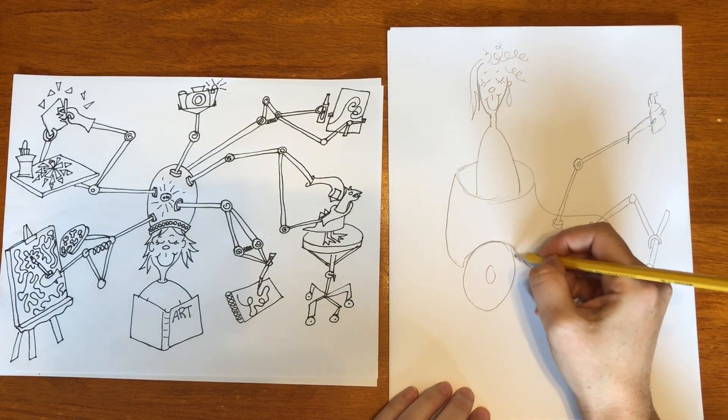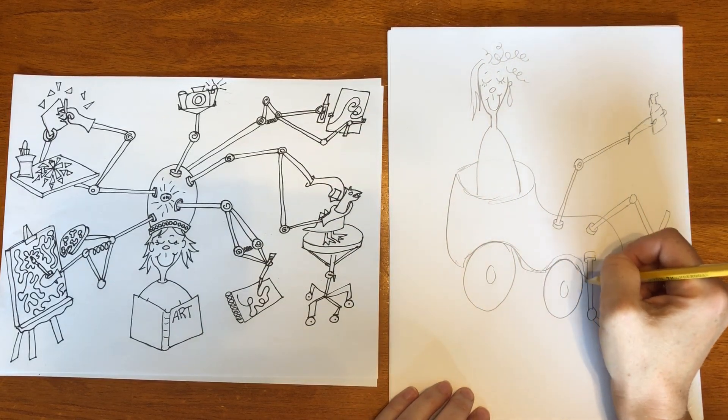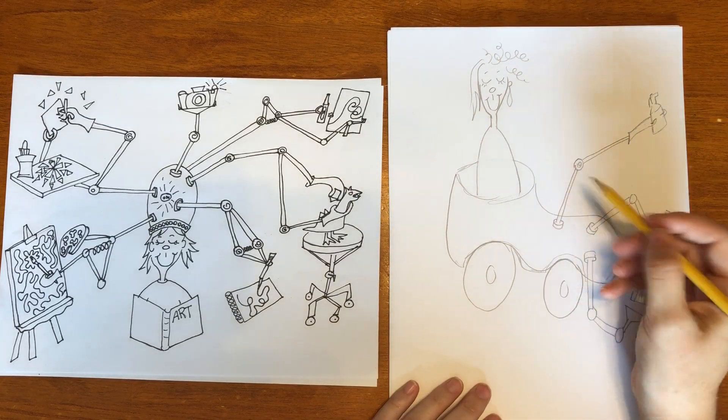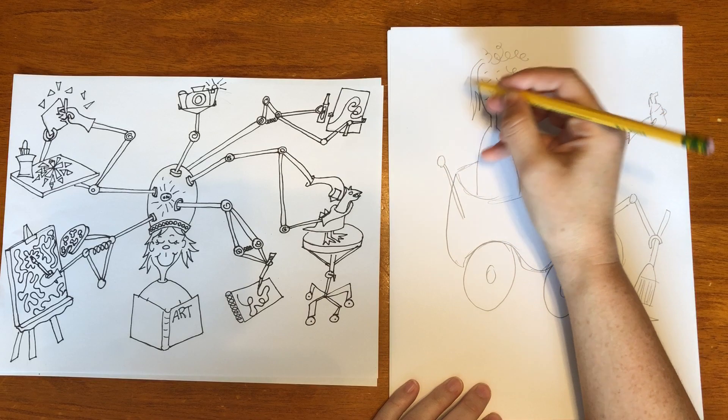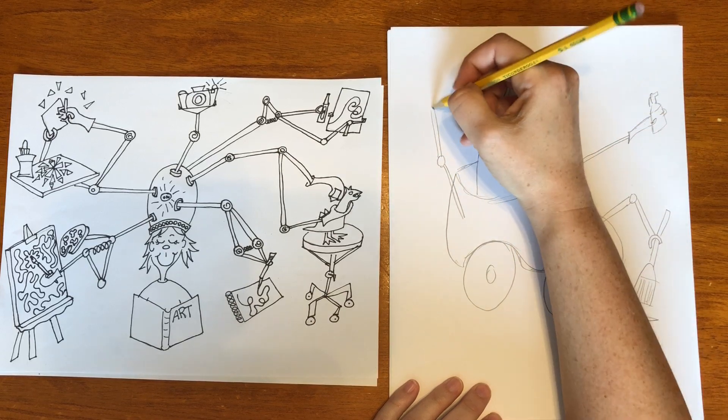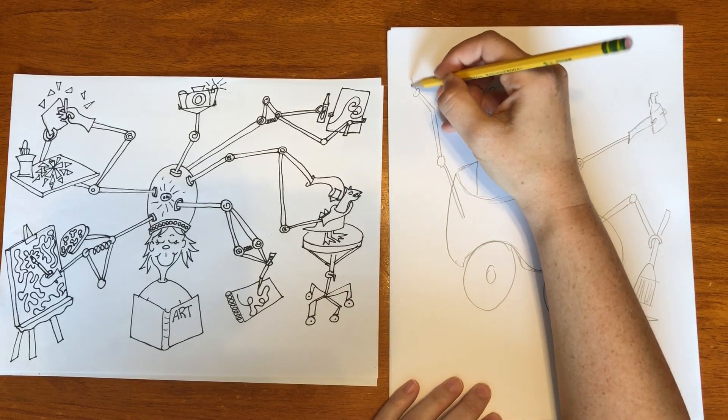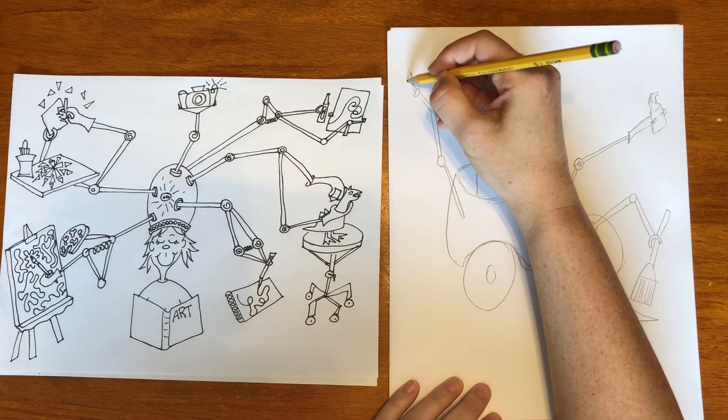Again this is just my idea sketch, just similar to the images that I showed you that Seuss did when he sketched out his designs. And you can again just keep adding arms. Maybe this is a duster.